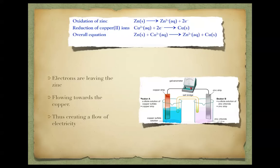The basic idea of a galvanic cell is that electrons leave from one side and flow towards the other, creating a flow of electricity and showing oxidation and reduction happening. In this example, we have zinc and copper strips in a solution of their respective ions. The zinc is being oxidized and therefore losing its electrons — because electrons are leaving the zinc, we call that the negative anode. Electrons are going towards the copper because the copper is being reduced, so we call this the positive cathode.